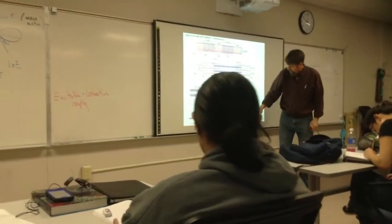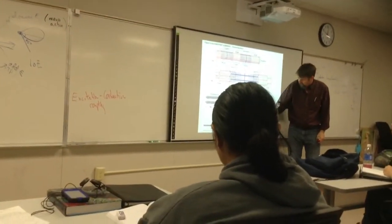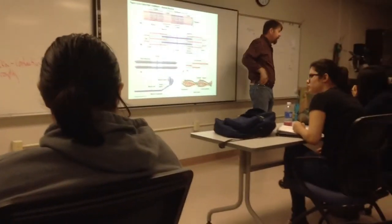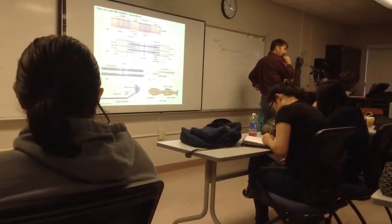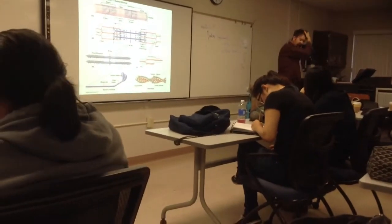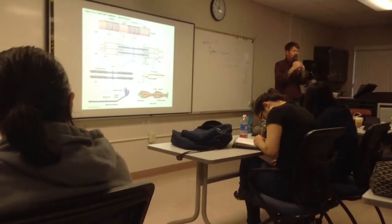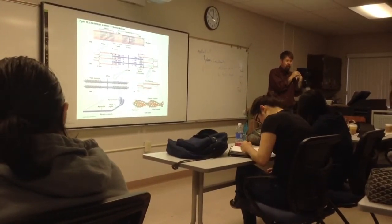There must be, then, if myosin is going to pull on actin, there must be a binding site for myosin to actin. And there you go. Actin has an active site that myosin binds to. And as soon as myosin would bind to actin, it would change shape to 45 degrees and pull.